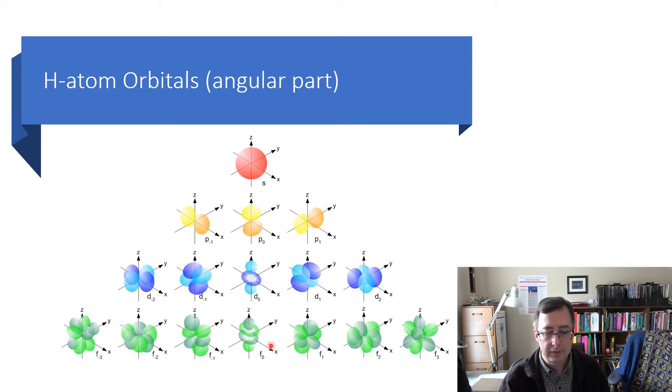F orbitals, you can see there's a set of seven of those, and they look kind of like more complex D orbitals. So, they have even more lobes. And again, they have two signs, plus and minus, and you alternate as you go around. This one, the F0, could also be called an FZ cubed orbital. And it looks like a generalization of this DZ squared orbital. Now, that's just the angular part of these.